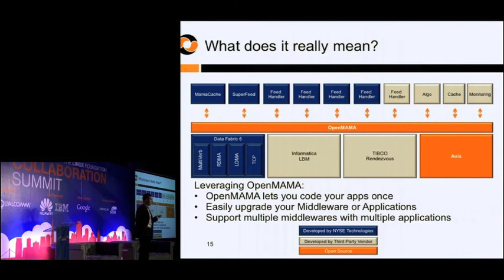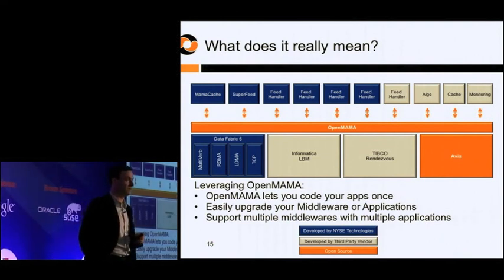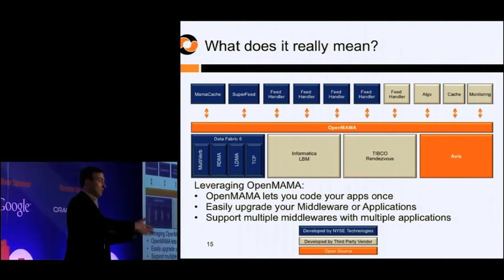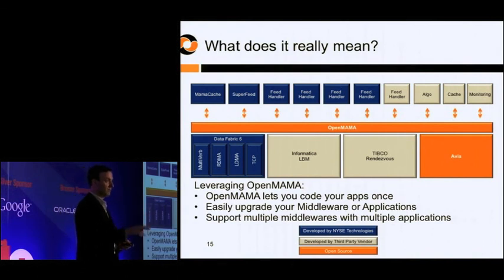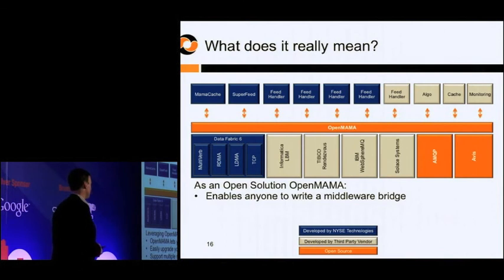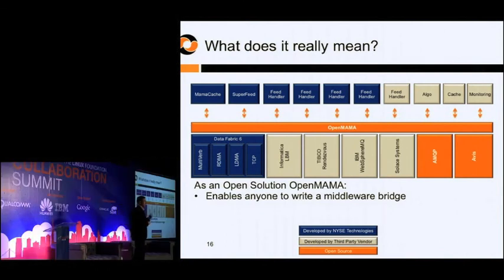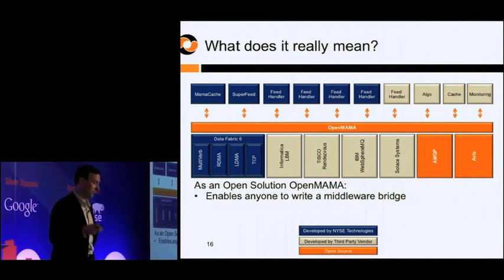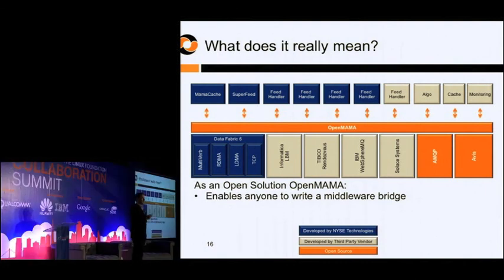What's even better is that you could use multiple types of middleware underneath your applications without rewriting any of them. There are four officially supported middlewares today: our own Data Fabric, Informatica LBM, Tibco Rendezvous, and an open-source implementation of Elvin called Avis. You could be sending quotes out on one of those and trades out of a different one, without changing your application — just changing the configuration specifying which topics go on which session.